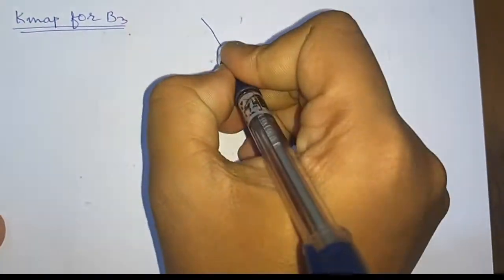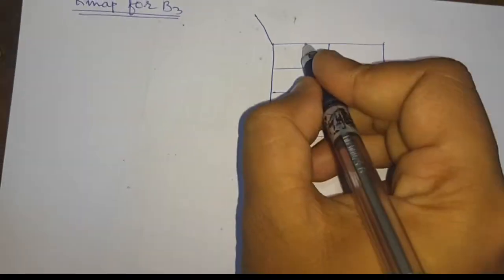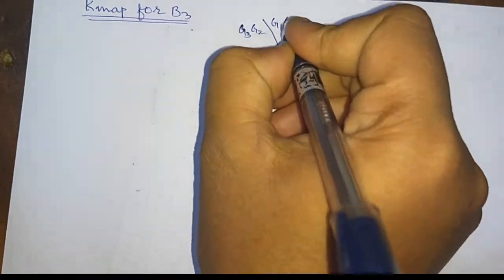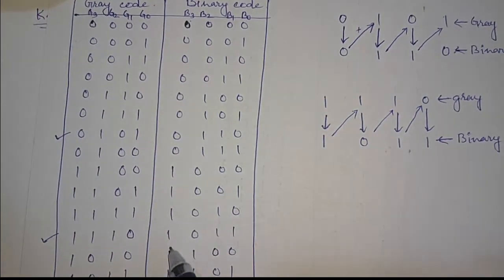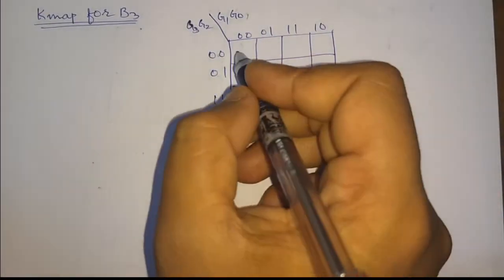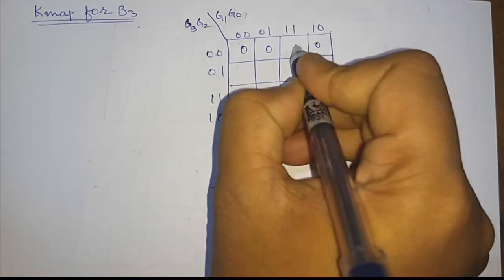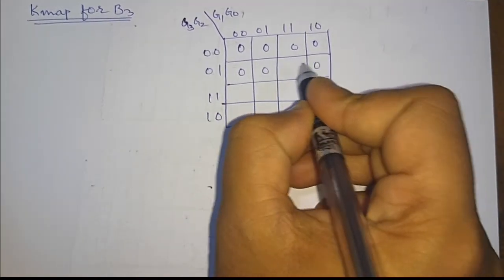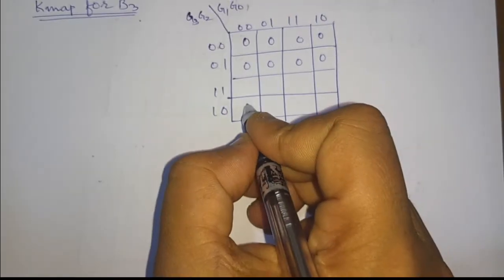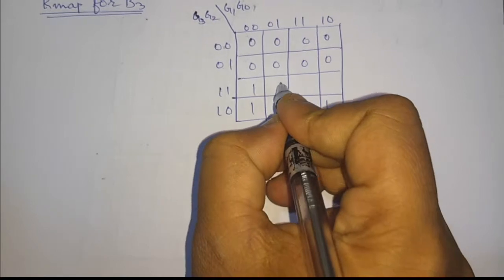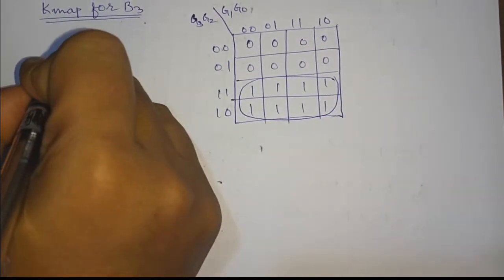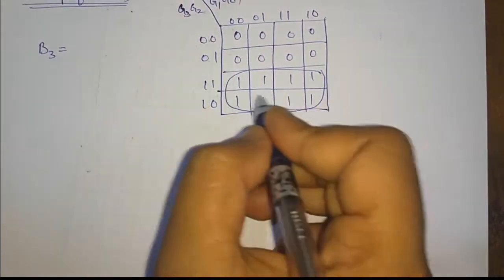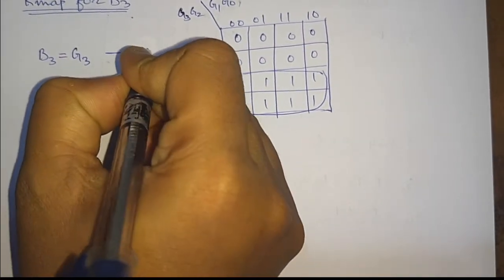Now we will make the K-map for B3. For B3 we have eight zeros followed by eight ones, so we fill in: zero zero zero zero zero zero zero zero, then one one one one one one one one. From here we get that B3 equals G3. This is equation number one.